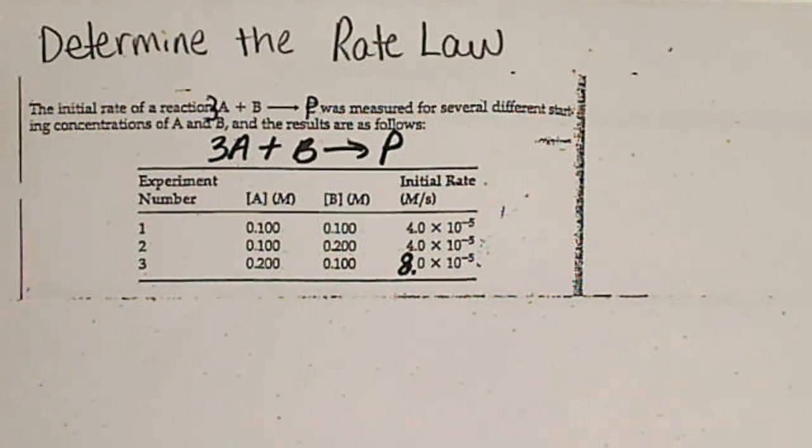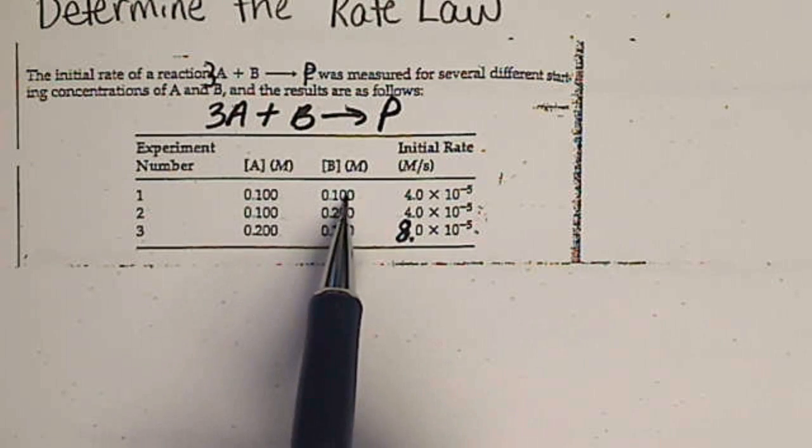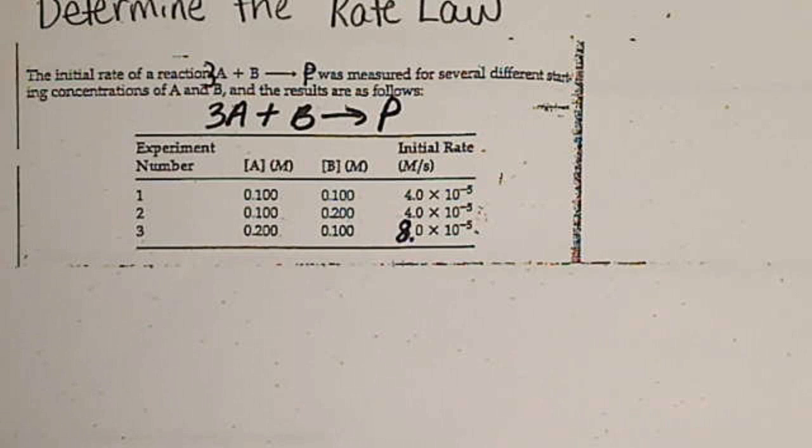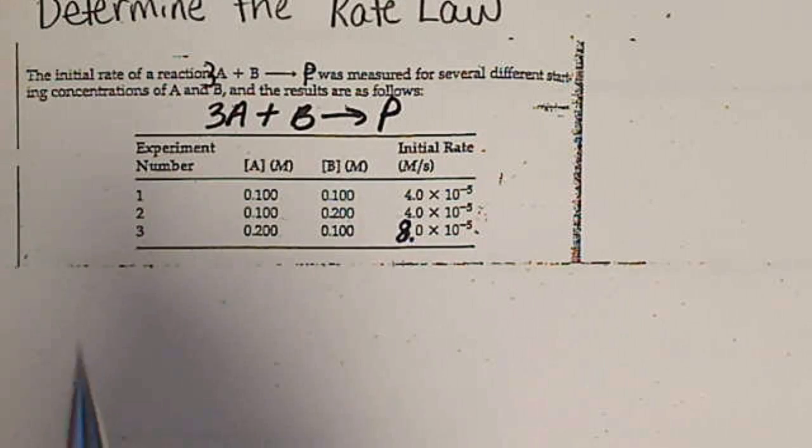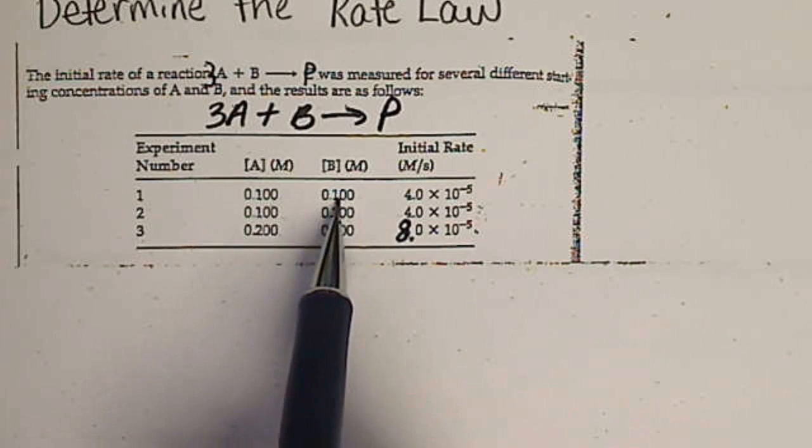So we've got to run some experiments where we vary the initial concentrations of A and B in a controlled fashion so that we only have one variable per experiment. So our initial experiment, we have A and B initial concentrations to be 0.1.